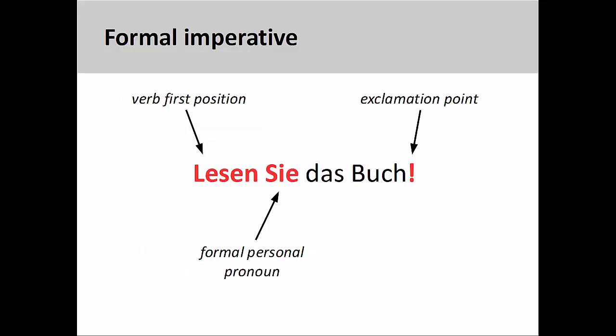In a prior presentation, we saw that the formal imperative was easy to form. You simply put the verb in the first position, the formal personal pronoun Sie in the second position, and add an exclamation point. You may wish to review that presentation before continuing with this one.